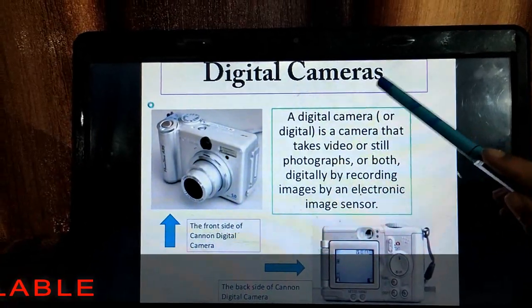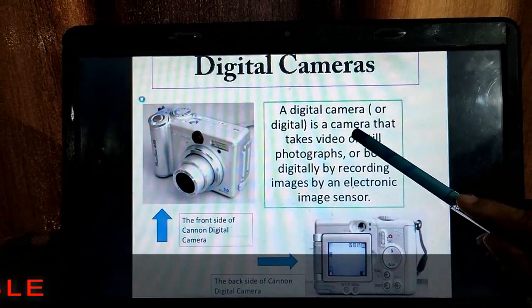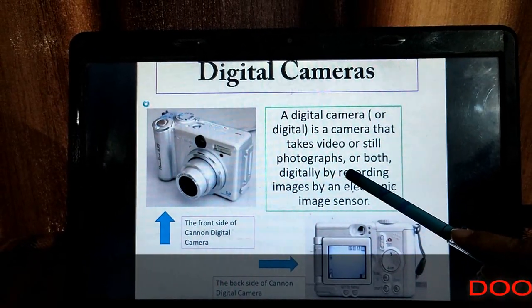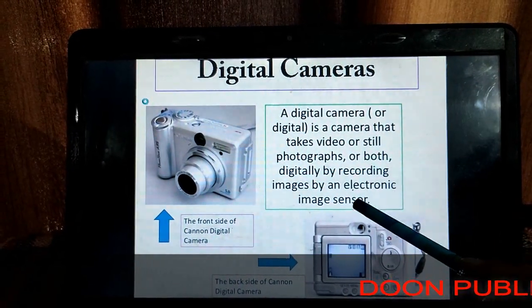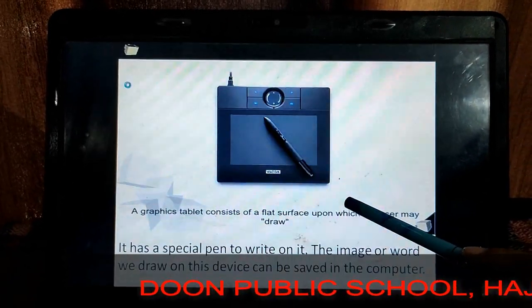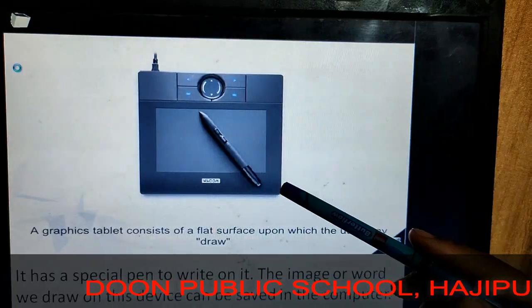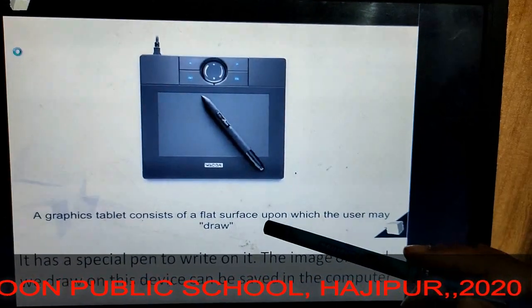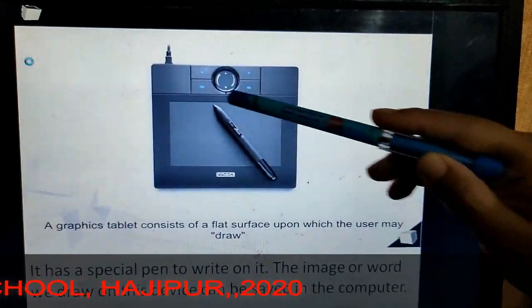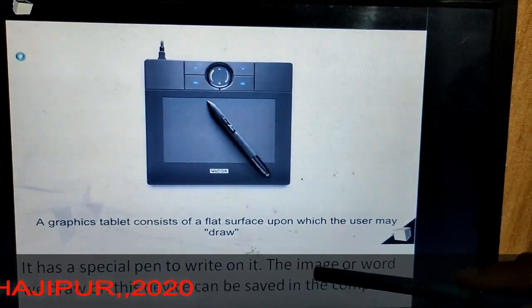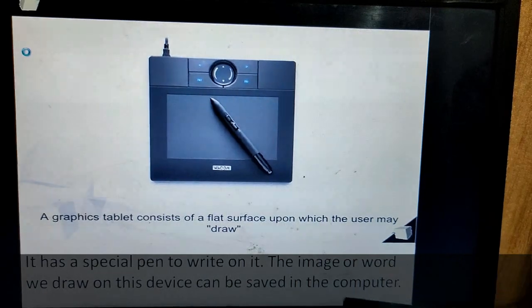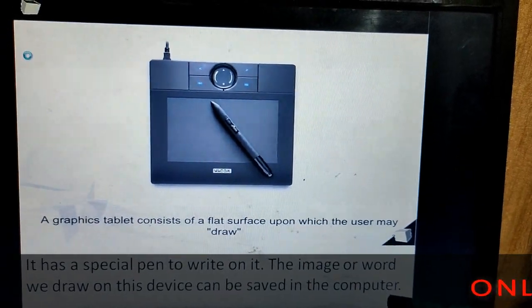Next is the digital camera. A digital camera is a camera that takes videos or still photographs and digitally records them in an electronic image sensor. This is a graphic tablet, which consists of a flat surface upon which the user may draw. It also has a special pen to write on it, and the image or word drawn on this device can be saved in the computer.